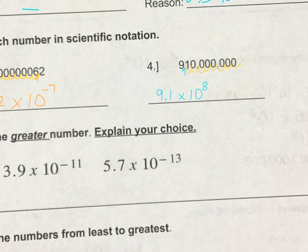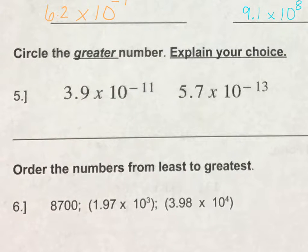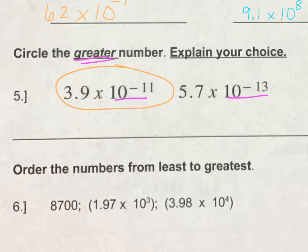Let's look at number five. Circle the greater number and explain your choice. So my first thought is to look at the exponents: 10 to the negative 11th versus 10 to the negative 13th. Which number is greater or bigger? 3.9 times 10 to the negative 11th is the bigger number. To explain this, you could put your answer in standard form and compare, or you could write a written explanation. I'm going to put the numbers in standard form and talk about the number of decimal positions.